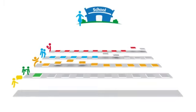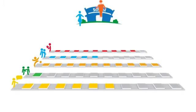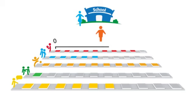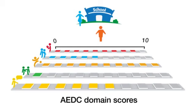Teachers' responses to the early development instrument are added together to give each child a score between 0 and 10 on each of the five domains. These five scores are referred to as AEDC domain scores.